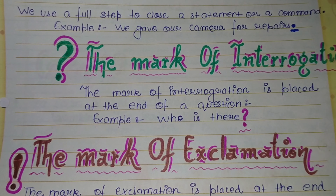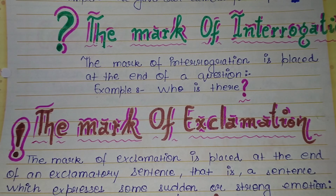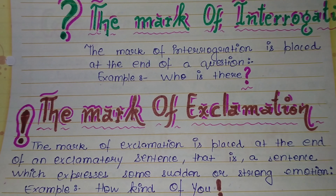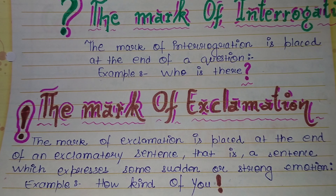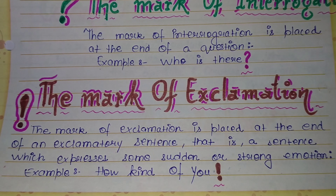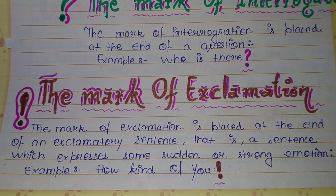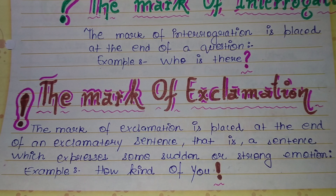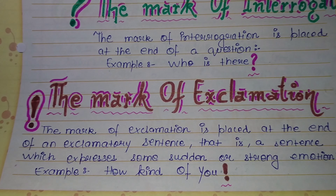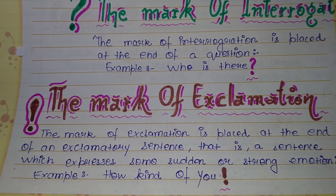The third one is the mark of exclamation. The mark of exclamation is placed at the end of an exclamatory sentence — a sentence which expresses a certain or strong emotion. Example: 'How kind of you!'